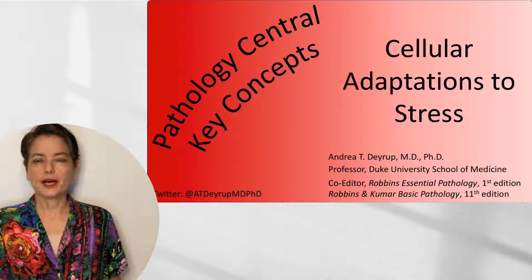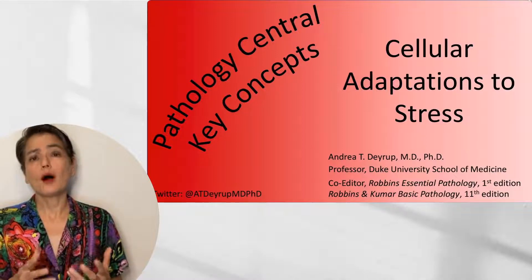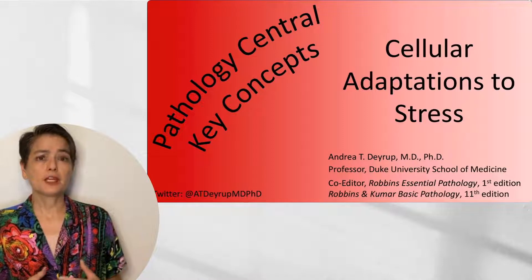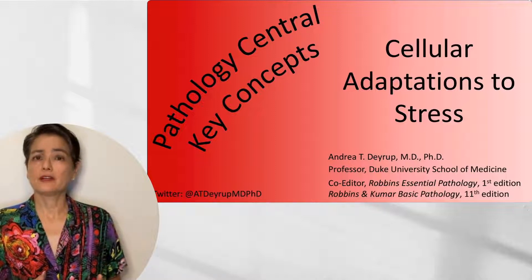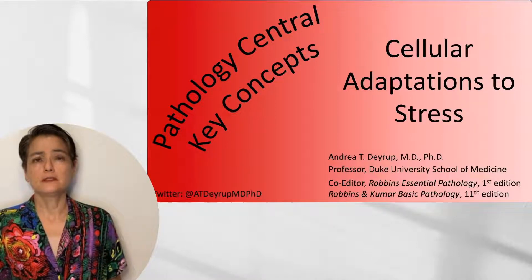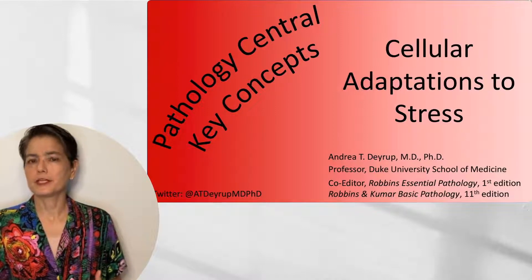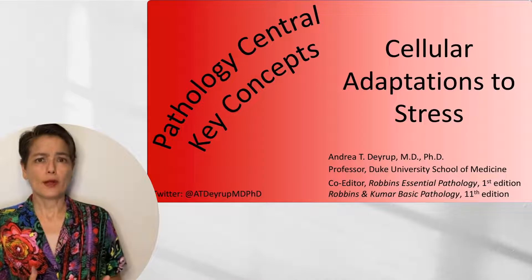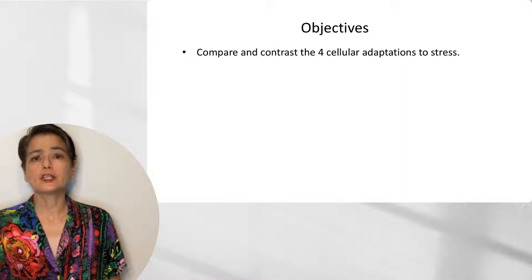Welcome to Pathology Central Key Concepts. The topic of this video is cellular adaptations to stress. Cells can experience a wide range of stressors. Bronchial epithelium can be exposed to toxins in cigarette smoke. The squamous mucosa of the esophagus can experience low pH due to acid reflux and gastroesophageal reflux disease. And cardiac myocytes may have to pump harder against increased pressure in hypertension. In this short video, I'm going to compare and contrast the four cellular adaptations to stress.